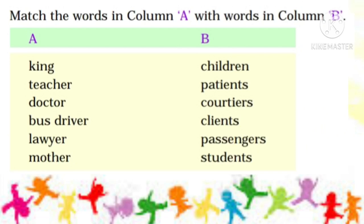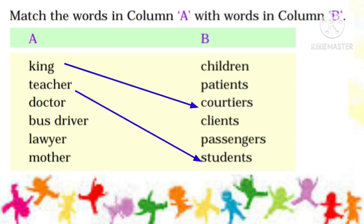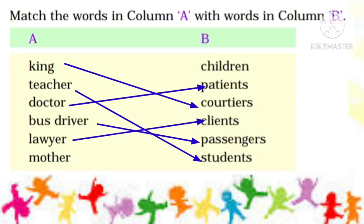Now match the words in Column A with the words in Column B: king with courtiers, teacher with students, doctor with patients, bus driver with passengers, and lawyer with clients, and mother with children.